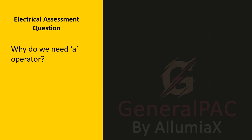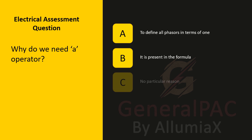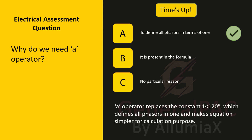Why do we need the A operator for symmetrical components? Is it to define all phasors in terms of one — for example IA versus IB versus IC — is it just to present in the formula, or no particular reason? The A operator is used to define all phasors in terms of one. It replaces the constant 1 at the angle of 120 degrees as a phasor, which defines all phasors in terms of one and makes the equation simpler. For example, we can take IA and represent IB and IC in terms of IA.